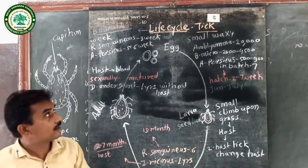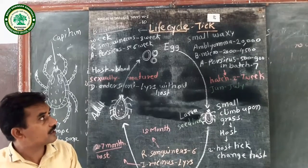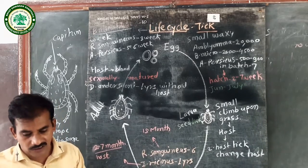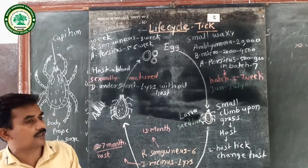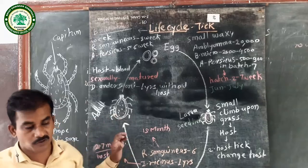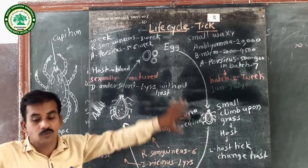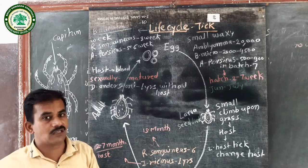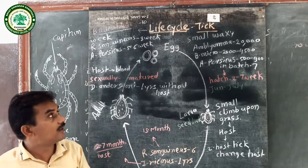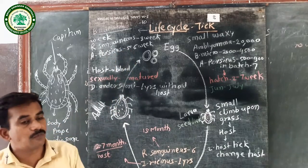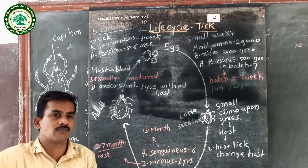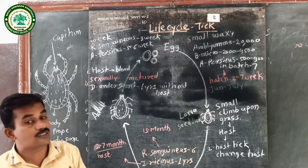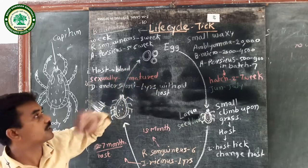Good morning friends. In parasitology, we study the life cycle of the tick. In the last lecture, we studied the morphology and different types of ticks — the systematic position, studying the mental system, population, ovulation, fertilization, and reproduction. This animal is an important ectoparasite as well as a partially endoparasite blood-sucking animal, found in all domestic animals as well as wild animals.